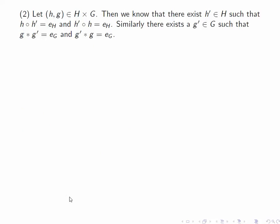We next need to prove the existence of an inverse of an arbitrary element of H cross G. So let's pick an element (h,g) in H cross G. We know that there exists an inverse for h, let's call it h prime, so h circle h prime equals E_H and h prime circle h equals E_H.